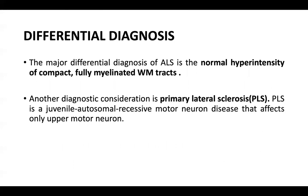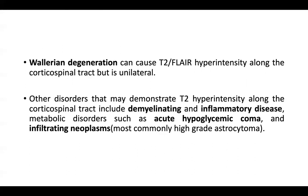Regarding differential diagnosis, the major differential of ALS is normal hyperintensity of compact, fully myelinated white matter tracts. Another consideration is primary lateral sclerosis (PLS), a juvenile autosomal recessive motor neuron disease affecting only upper motor neurons. Wallerian degeneration can cause T2 FLAIR hyperintensity along the corticospinal tract but is unilateral. Other disorders include demyelinating and inflammatory disease, metabolic disorders such as acute hypoglycemic coma, and infiltrating neoplasm.